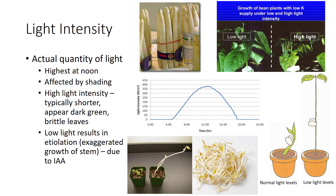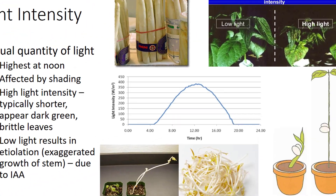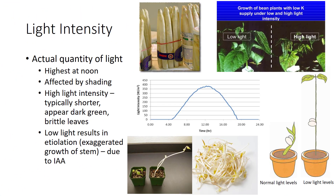Abiotic factors are non-living factors such as light, temperature, air, moisture, and wind that affect the atmospheric environment. The main source of light for all plants is the sun. When discussing light, three components must be taken into consideration: light intensity, light quality, and photoperiod. Light intensity is the actual quantity of light. The highest light intensity occurs at noon. The actual amount of light reaching the plant is affected by a variety of factors such as clouds, trees, or buildings that cause shading.